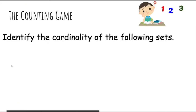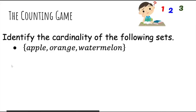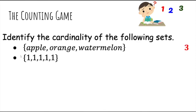Let's do some examples of cardinality. This set clearly contains three distinct fruits, so the cardinality is three. What about this one? Well, this contains a bunch of ones, but they're all the same element. Remember, sets only include unique elements, so this is really just the set containing one — there's only one unique element.